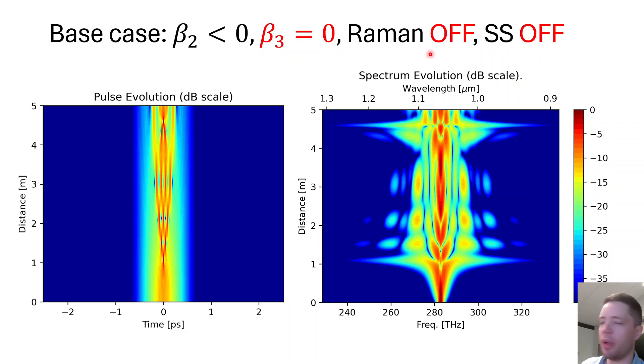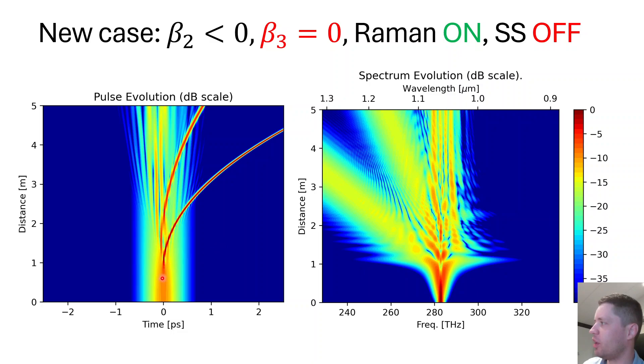Next we can take a look at the case where we switch the Raman effect on and off. If we activate the Raman effect, we can see that we actually get two instances of soliton fission. There is the first one right here which clearly has the highest power, and then a secondary one that's less intense.